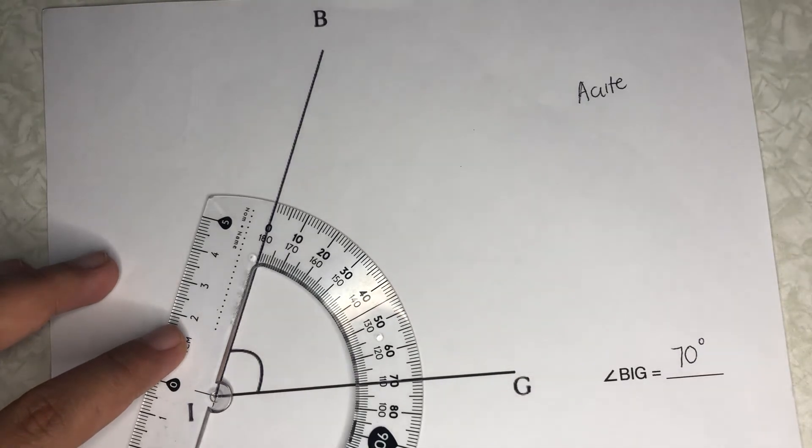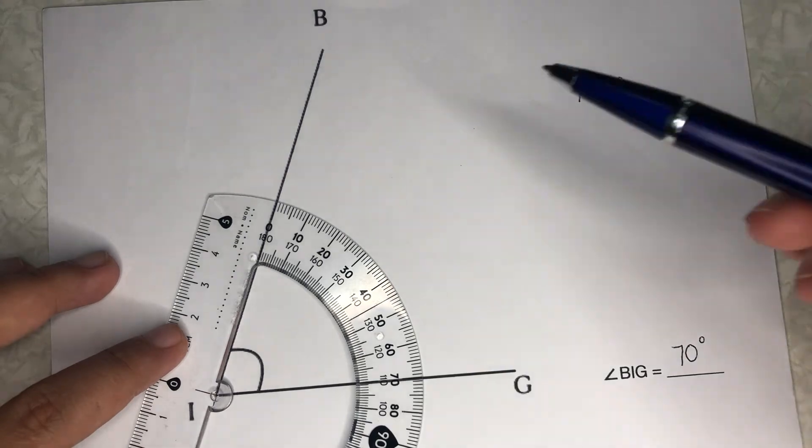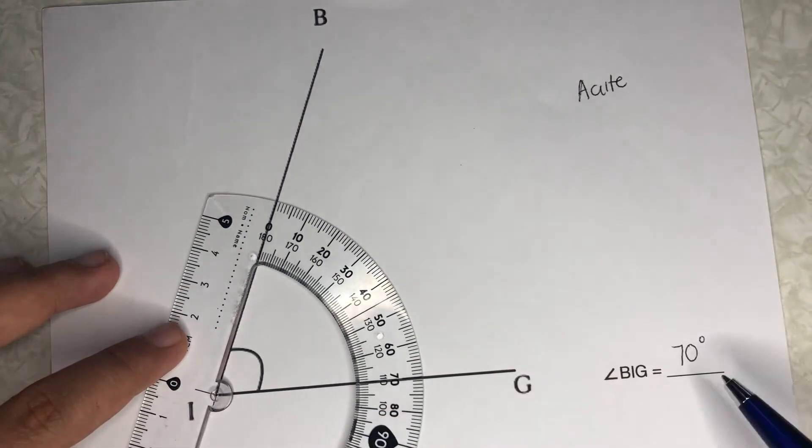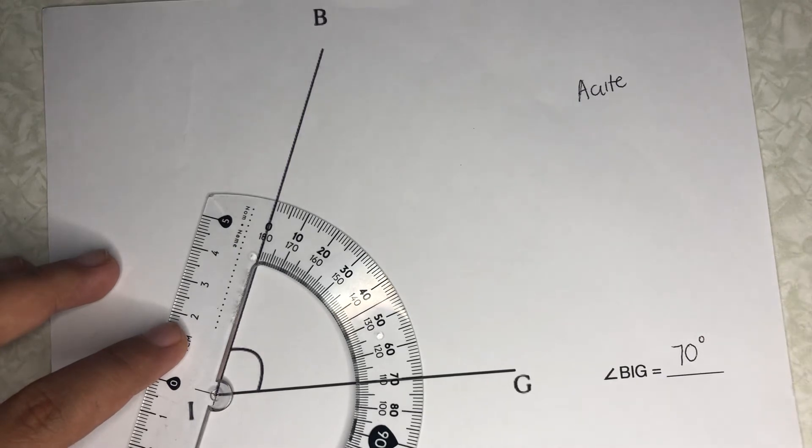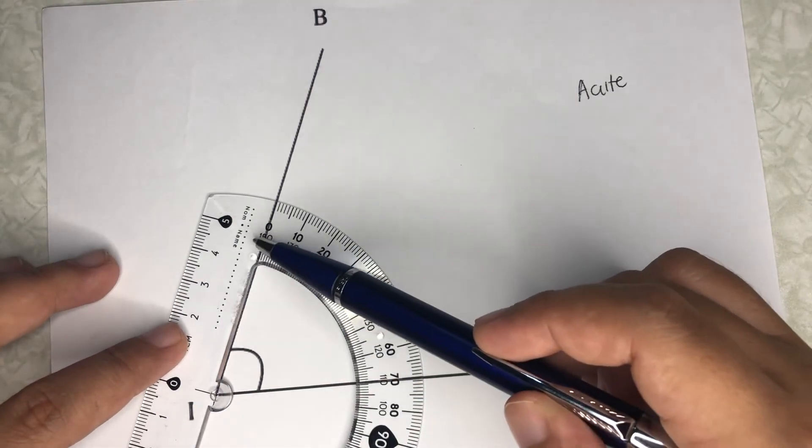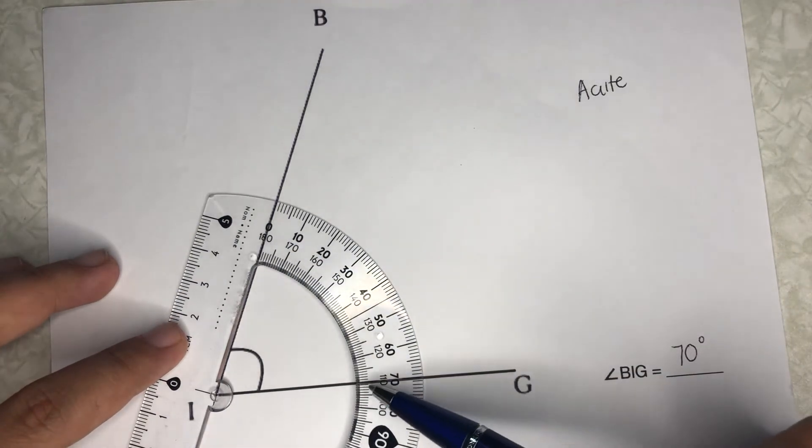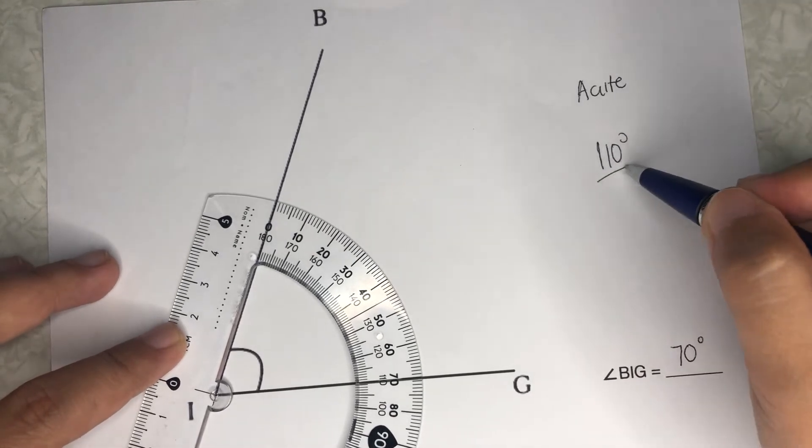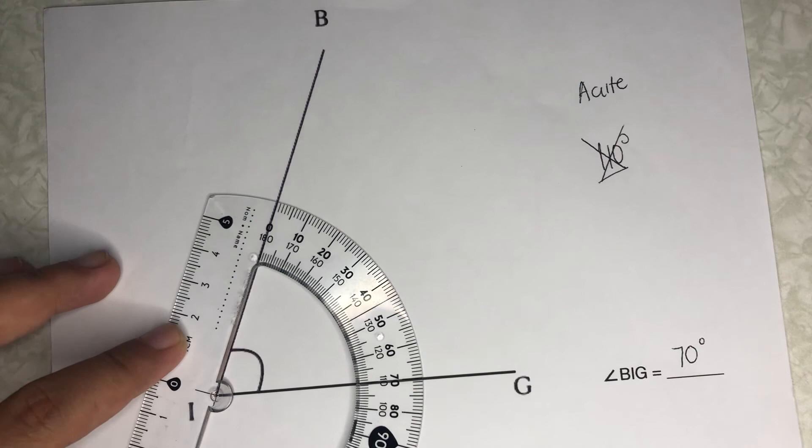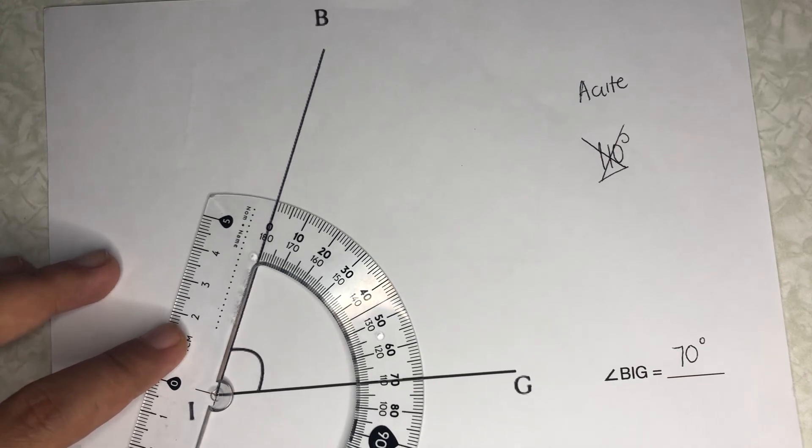So no matter what leg you align and what scale you use, you still have to get 70 degrees. If you use the wrong scale, say for example you use the inner scale here, you will get an answer of 110 degrees. And 110 degrees is not acute, it is obtuse. So again, a good way to estimate your angle is to first look at it.